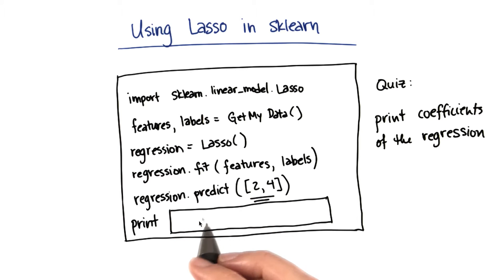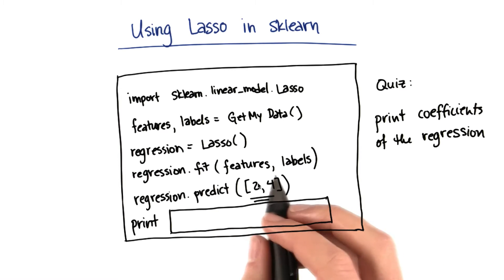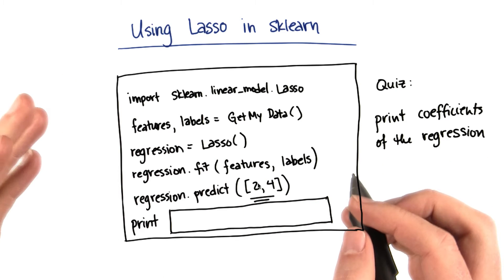Suppose now that I've done my fitting with my lasso regression, maybe I've predicted a point or two with it. Let's say that I want to understand the effect of the fact that this is a regularized regression.